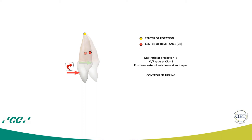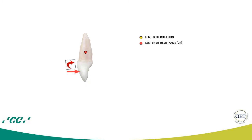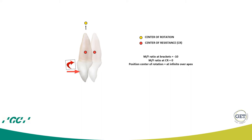Now, if we apply at the center of the crown a moment of minus 10 gram-millimeters — equal and opposite to the moment the force creates with respect to the center of resistance — the moment-to-force ratio at the bracket will be minus 10. At the center of resistance, the moment-to-force ratio will be zero, because the 10 gram-millimeter moment created by the force is cancelled by the applied minus 10 moment. With a net moment of zero, this is characterized as translation, with the center of rotation at infinity beyond the apex.